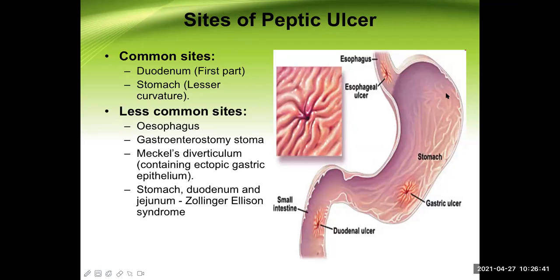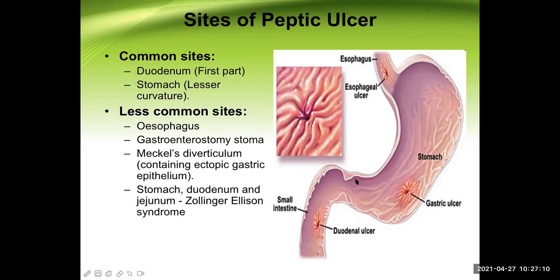A student suggests that the lesser curvature is also at higher chance of aspiration of duodenal contents. That is another reason — not the usual cause, but due to complications. For example, if the pyloric sphincter is not working properly, or during reconstructive surgery where the remaining stomach is directly connected with the duodenum, there may be a chance of reflux, and the lesser curvature and pyloric area have more contact than the greater curvature.